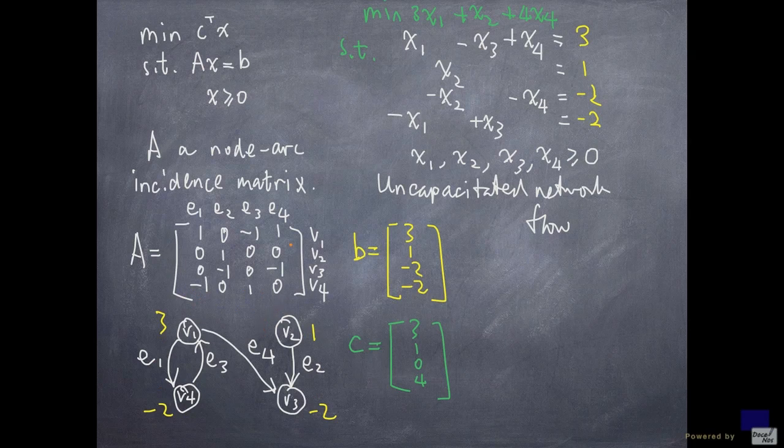Then, there's only one redundant row, and we can delete any one of these rows. The resulting matrix will have full row rank.